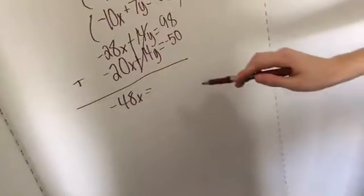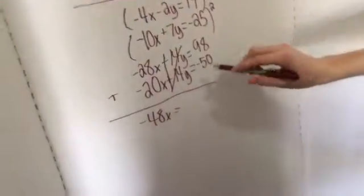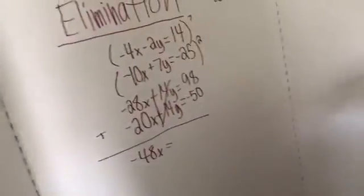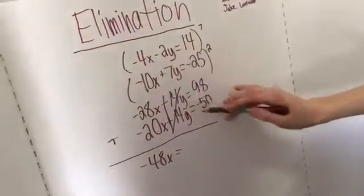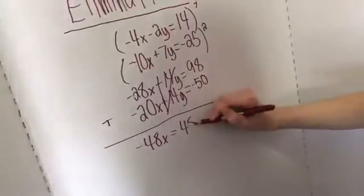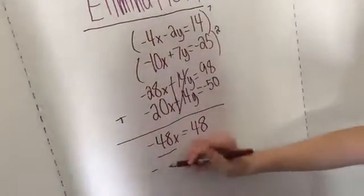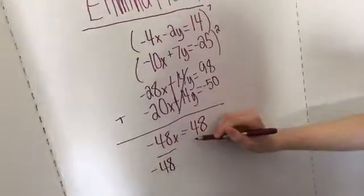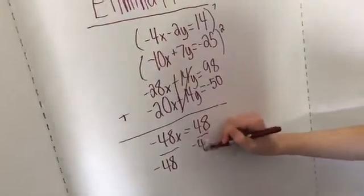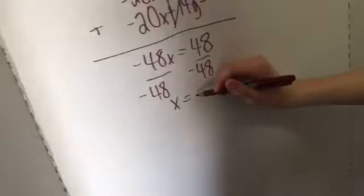So this next one, it's 98 plus negative 50, so it's like 98 minus 50. And so that would also come out to be a positive 48 this time. So now we're going to go ahead and divide by negative 48 to get x by itself. And so this comes down to negative 1. x equals negative 1. That's our x? Yes, so that's our x.